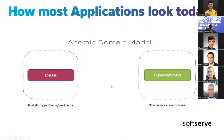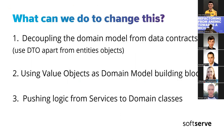For each of the two options — anemic and rich domain models — there are applicable cases when they can be used, and we can also combine these models in one application. But in general, when we have only data and operations situated in some other place, we have the anemic model.